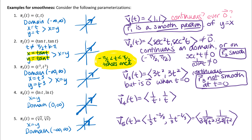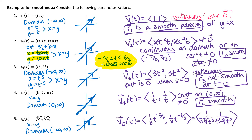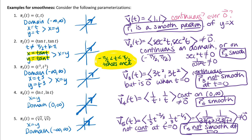For r4, the velocity vector is not continuous for all values of t, but it is continuous on the domain (0, ∞), and the velocity vector is never the zero vector. So r4 is also a smooth parameterization on its domain — a smooth parameterization of the line y = x. For r5, the velocity vector is not continuous at t = 0, and t = 0 is in the domain, so r5 is not smooth at t = 0, even though the velocity vector is never the zero vector.